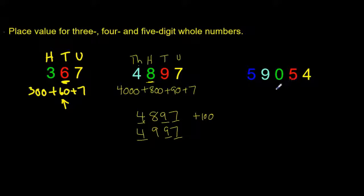Let's go on to the next one. This whole number is 59,054. There's a 4 in the units column, there are 5 sets of 10, there are no sets of 100, there are 9 sets of 1000, and there are 5 sets of 10,000.